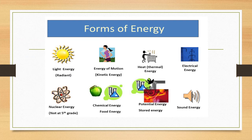Let us first discuss the main forms of energy: light energy, kinetic energy or potential energy, heat energy, electrical energy, nuclear energy, chemical energy, and sound energy. These are the main forms of energy which we are going to discuss in this chapter.